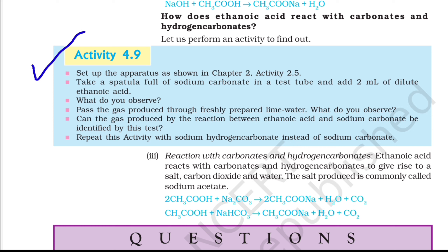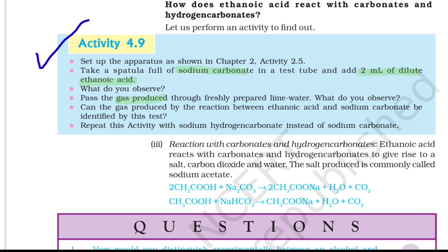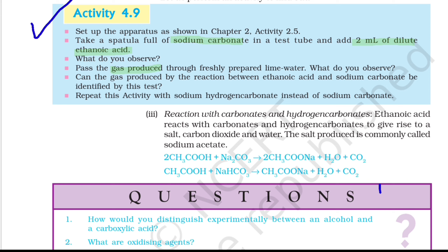Now let's see Activity 4.9. In this activity we will have to take a spatula full of sodium carbonate and 2 ml of dilute ethanoic acid, and then check which gas is produced. Here we take sodium carbonate — that is Na₂CO₃ — and 2 ml of dilute ethanoic acid. In this reaction we will see that a gas is coming out. We will pass it through freshly prepared lime water.